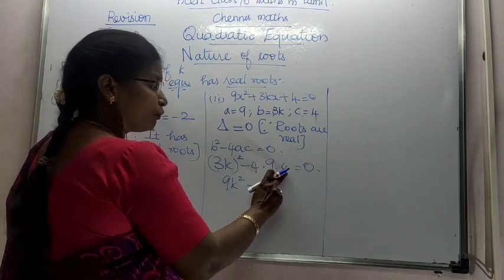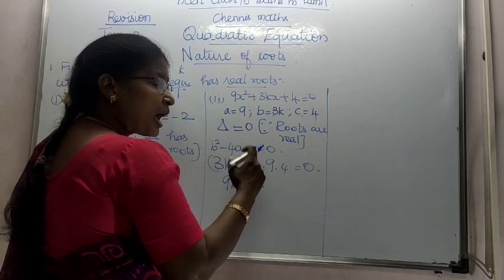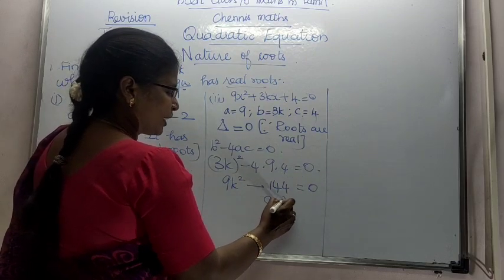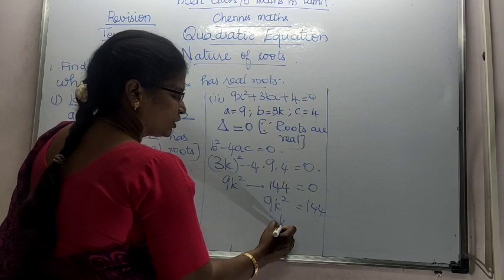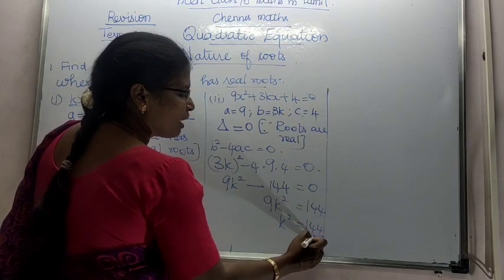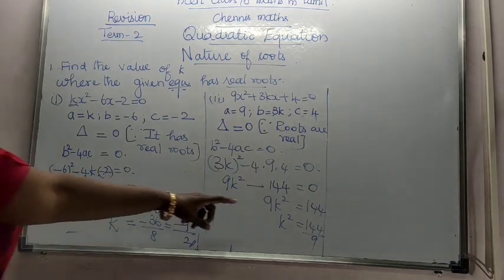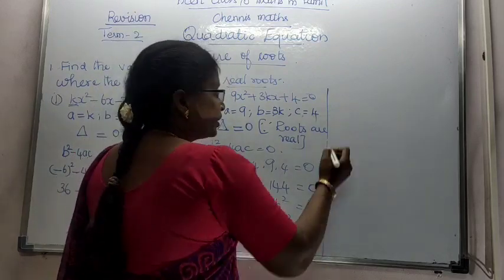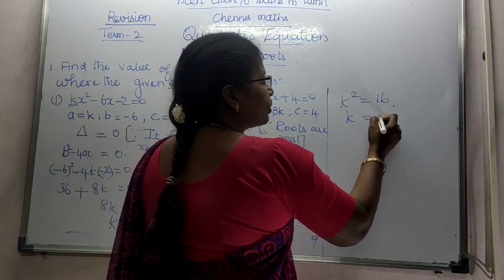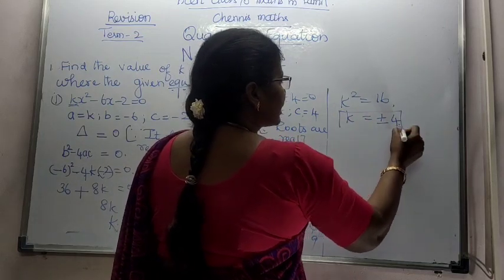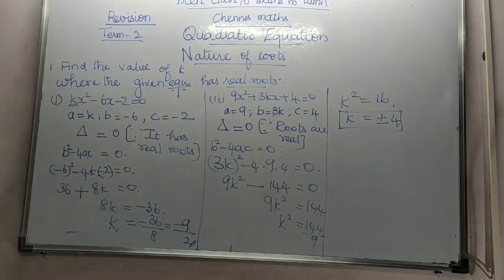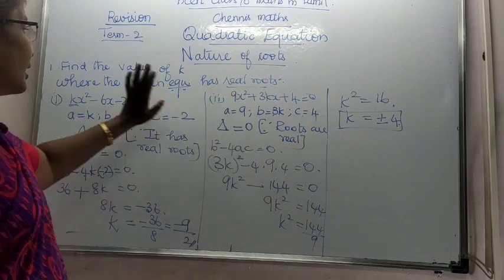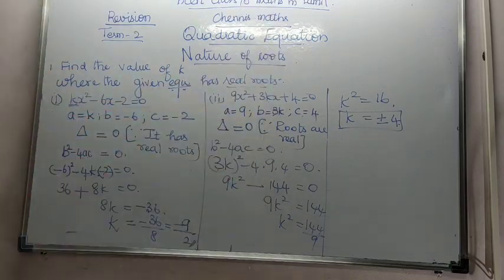3 threes are 9. 9k squared minus 4 fours are 16, 16 into 9 is 144. Now 9k squared is equal to 144. K squared is equal to 144 divided by 9, which is 16. Therefore k squared is equal to 16, k is equal to plus or minus 4. Therefore k has two answers, plus 4 or minus 4, for making this equation have real roots.